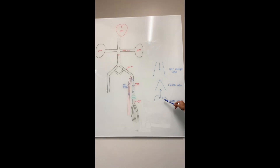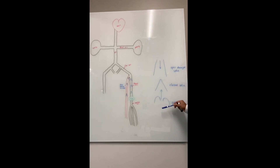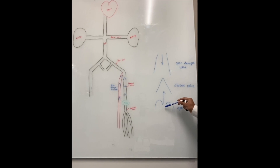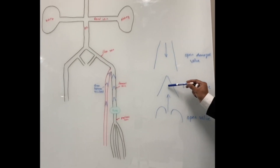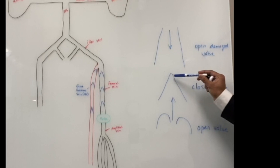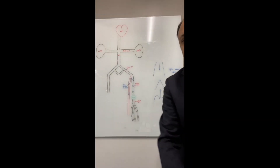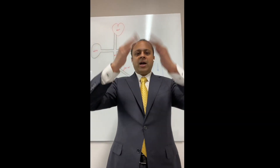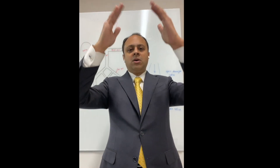Now, you can see here — this is a valve that is in the open position, and the direction of blood flow is up towards the heart, and this is a closed valve. So generally, what's happening is the valves are pushing the blood up towards the heart.